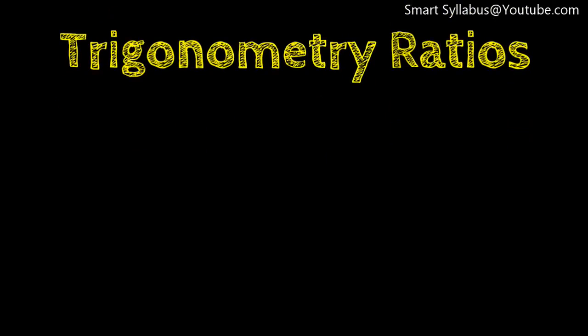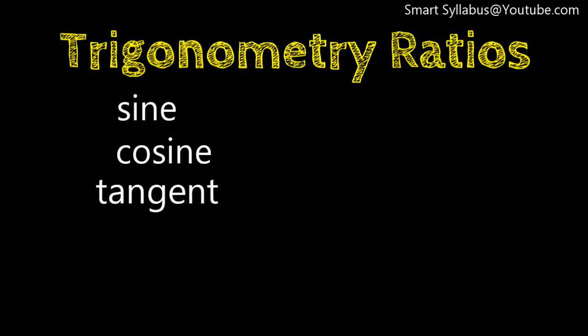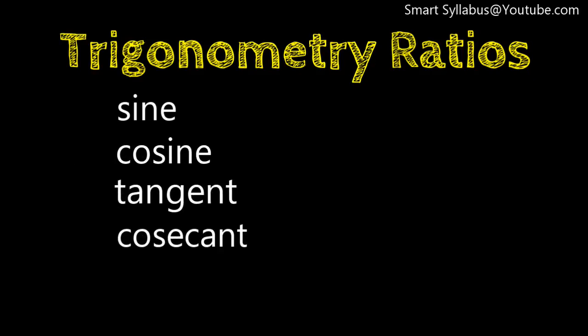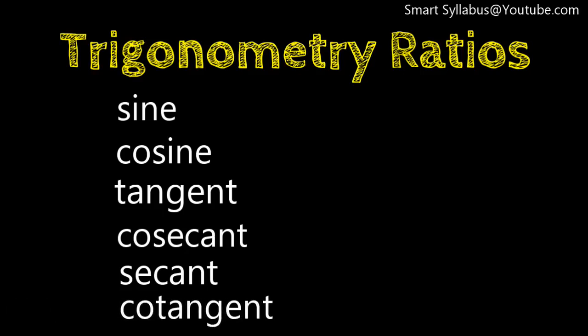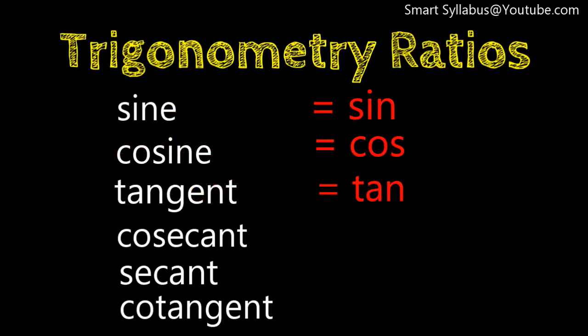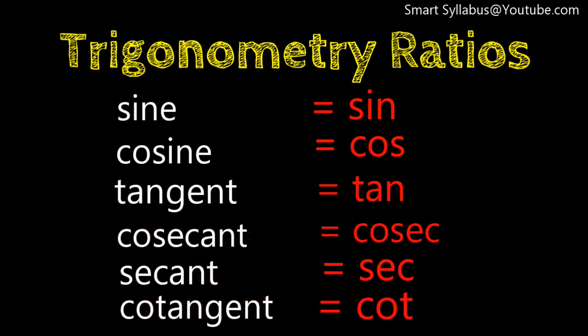Even today, most technologically advanced methods used in engineering and physical sciences are based on this revolutionizing branch of mathematics — trigonometry. Today we will discuss the six ratios of trigonometry, which are just like the pillars of trigonometry. The six trigonometric ratios are: sine (sin), cosine (cos), tangent (tan), cosecant (cosec), secant (sec), and cotangent (cot).